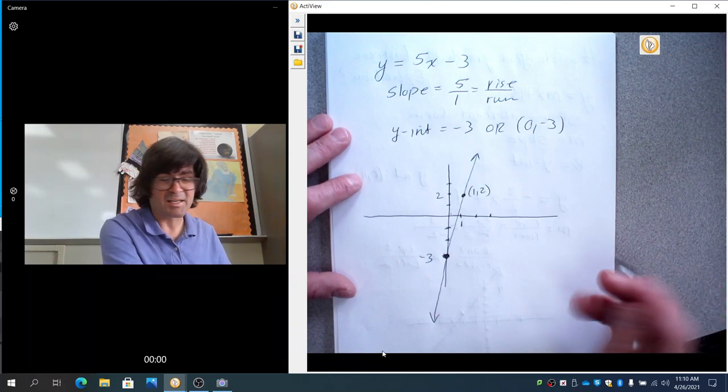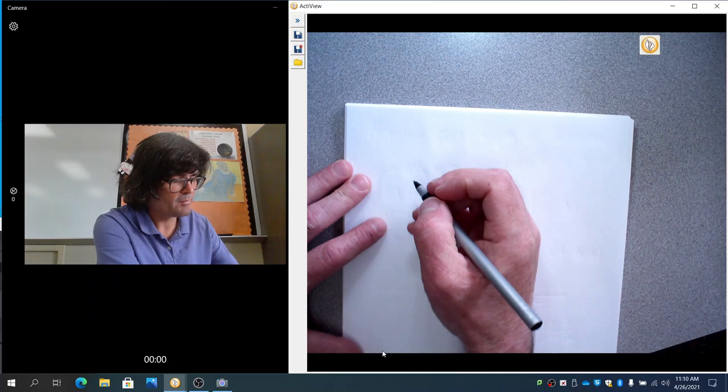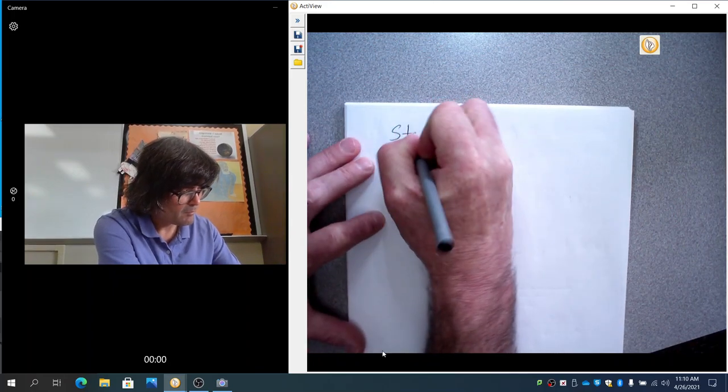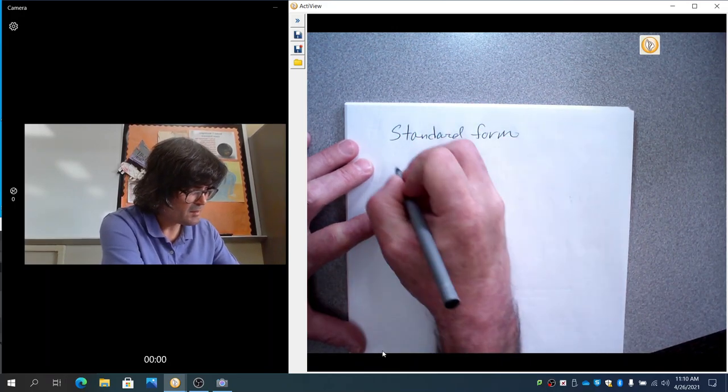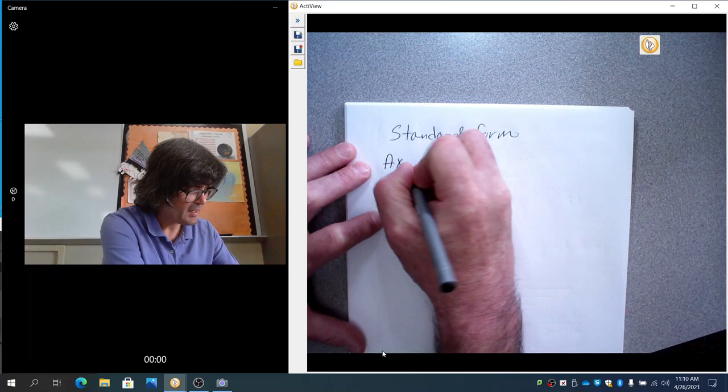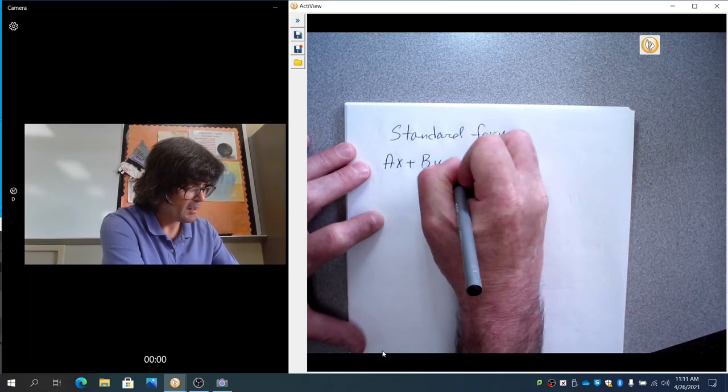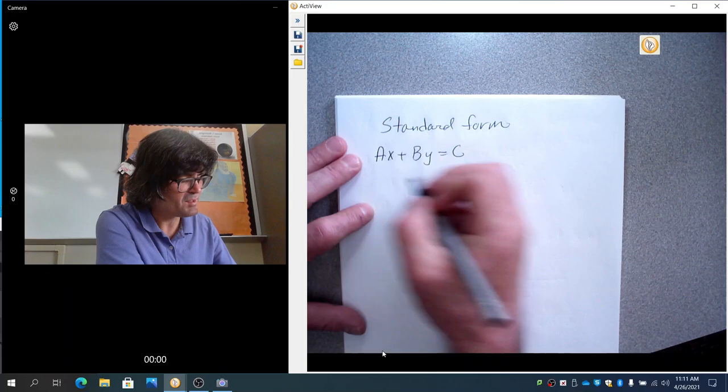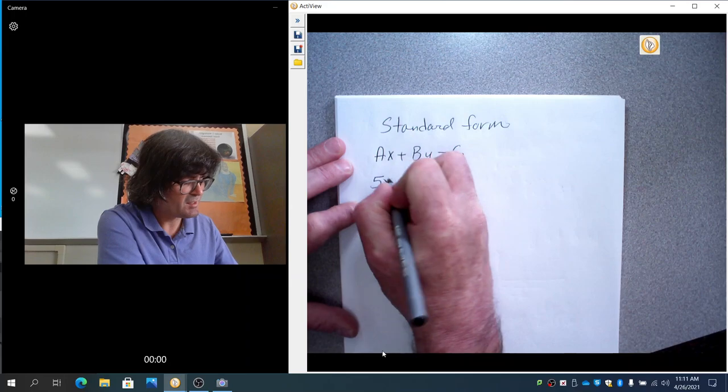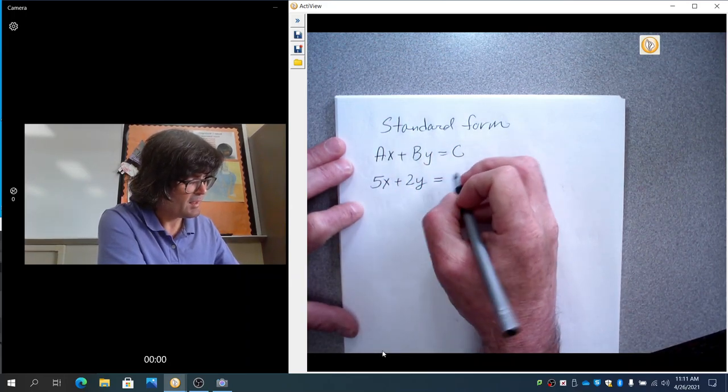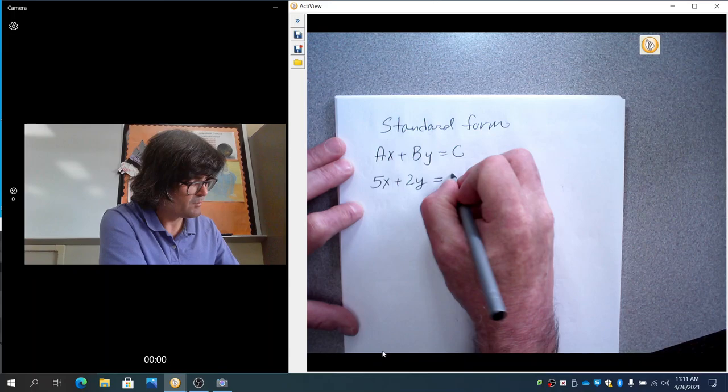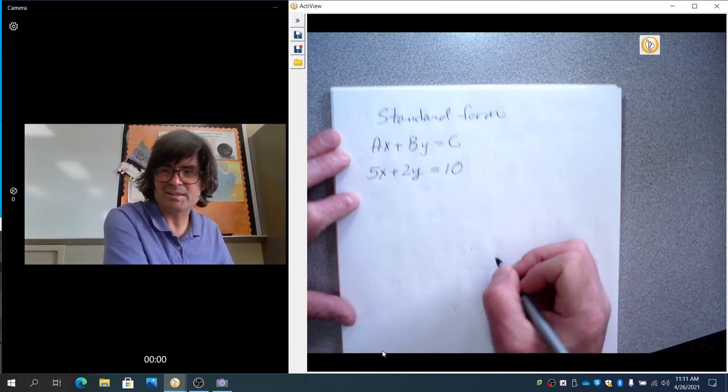I want to show you one more form called standard form. Standard form. That is a number times x plus a number times y equals a number. And it looks kind of confusing, but let's just make up an example. How about 5x plus 2y equals 10. And we'll make this one easy to start out with.